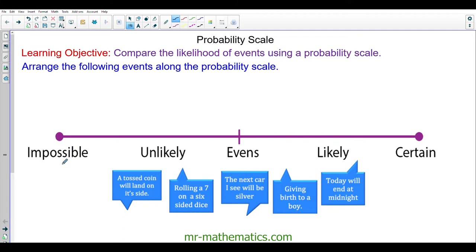If an event is impossible to happen, that means there is zero chance of it happening. Impossible means zero. If it is certain to happen, there is a 100% chance of it happening, and 100% is one. Halfway between zero and one is one half. So the word evens means one half.